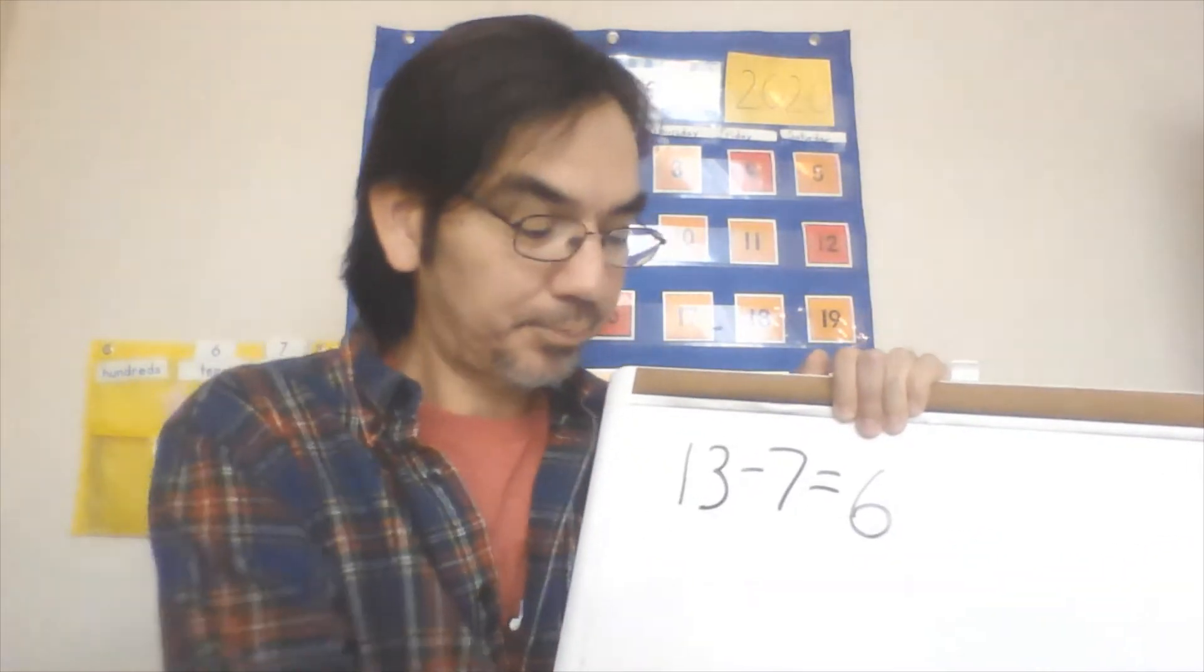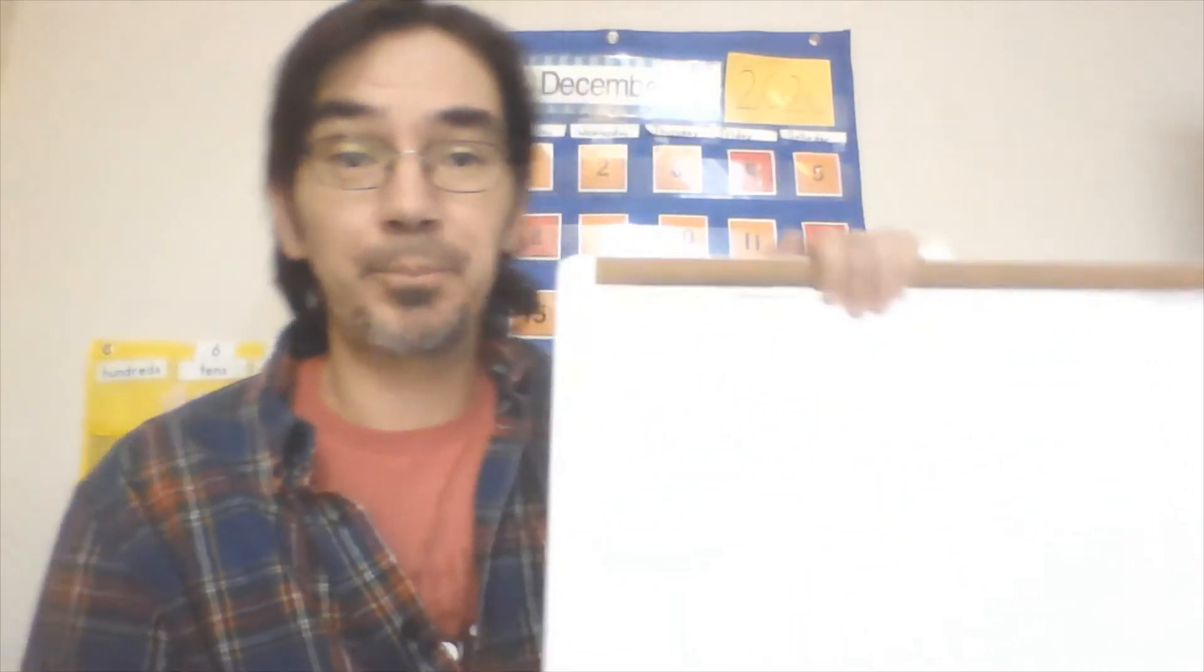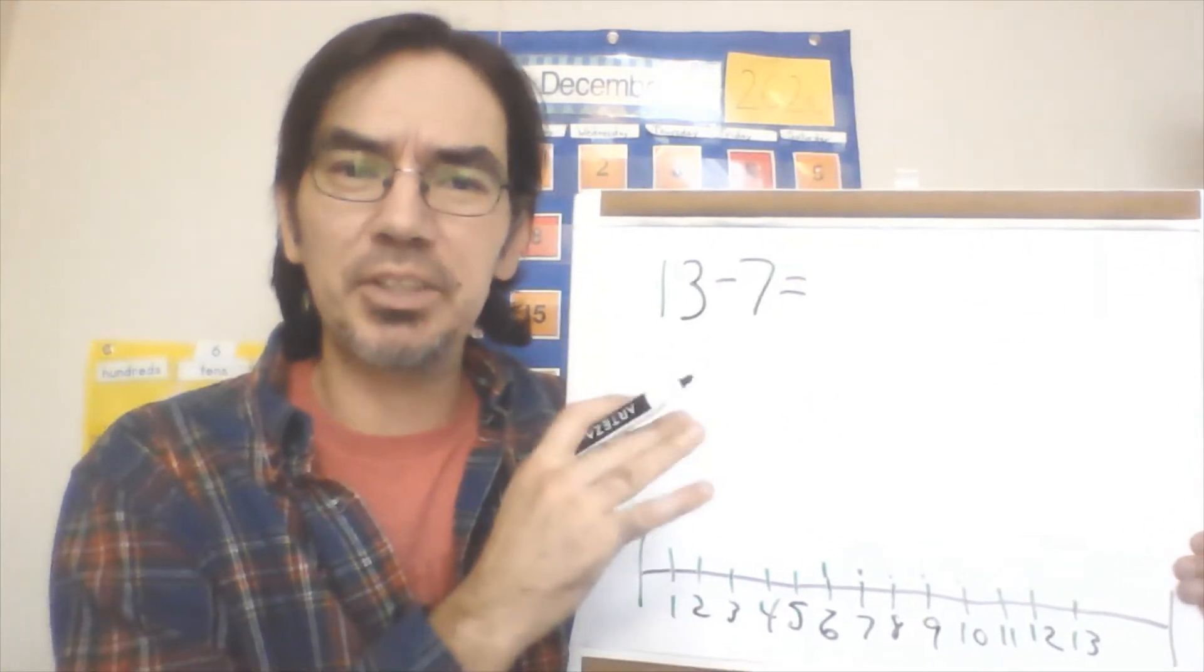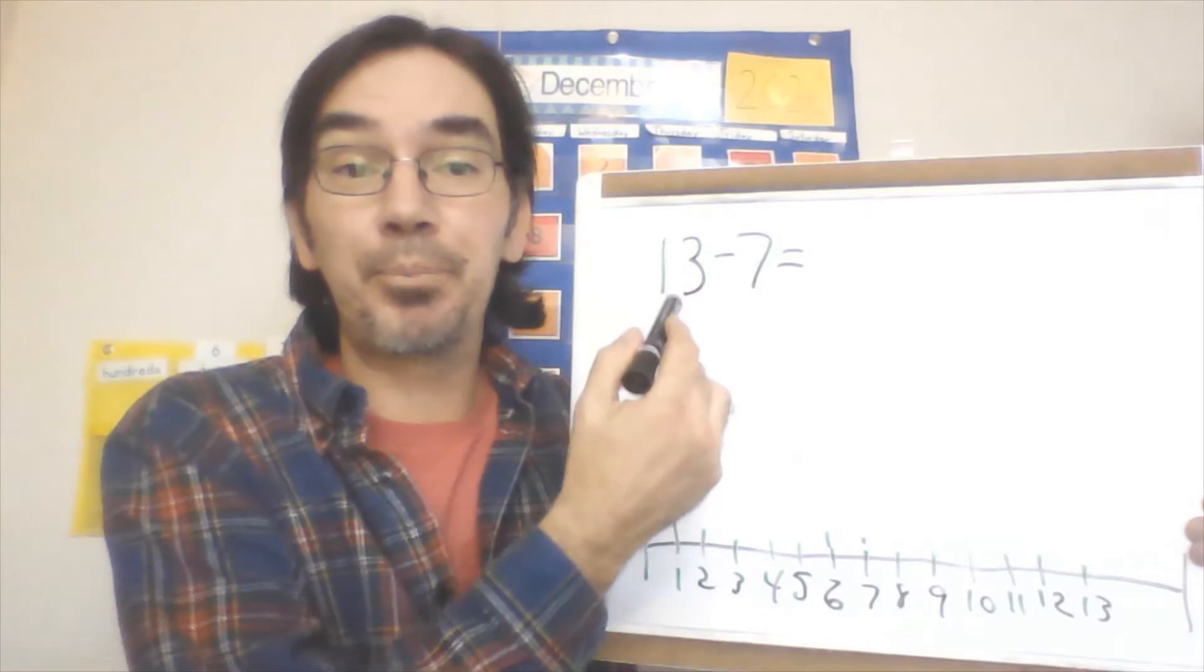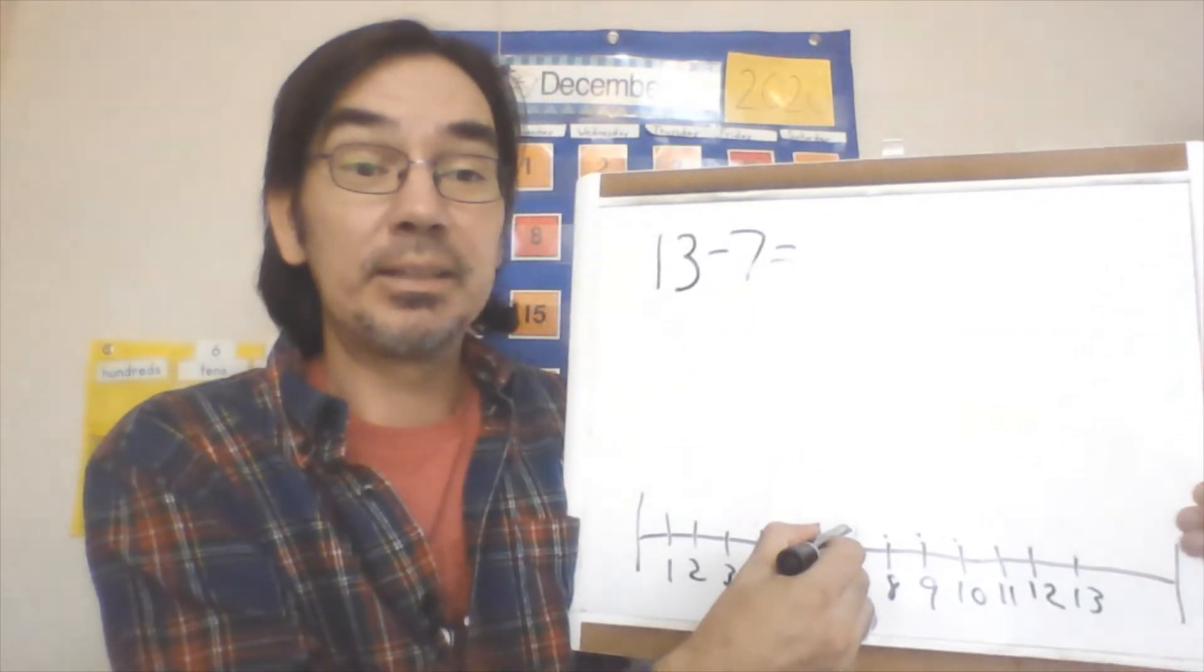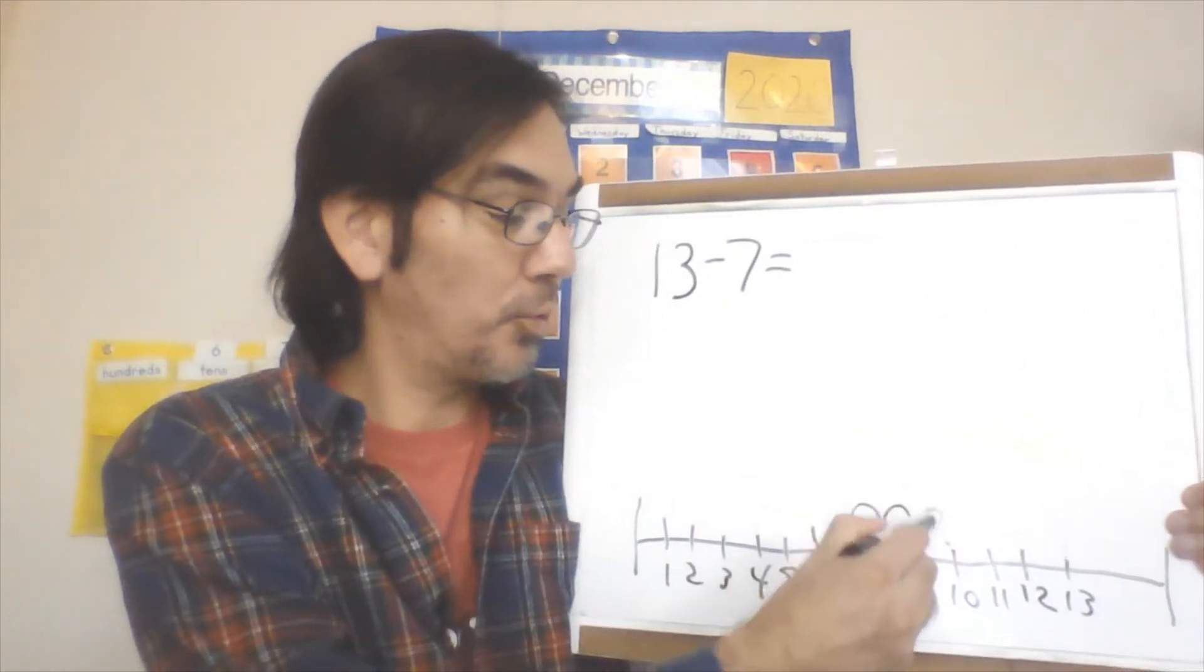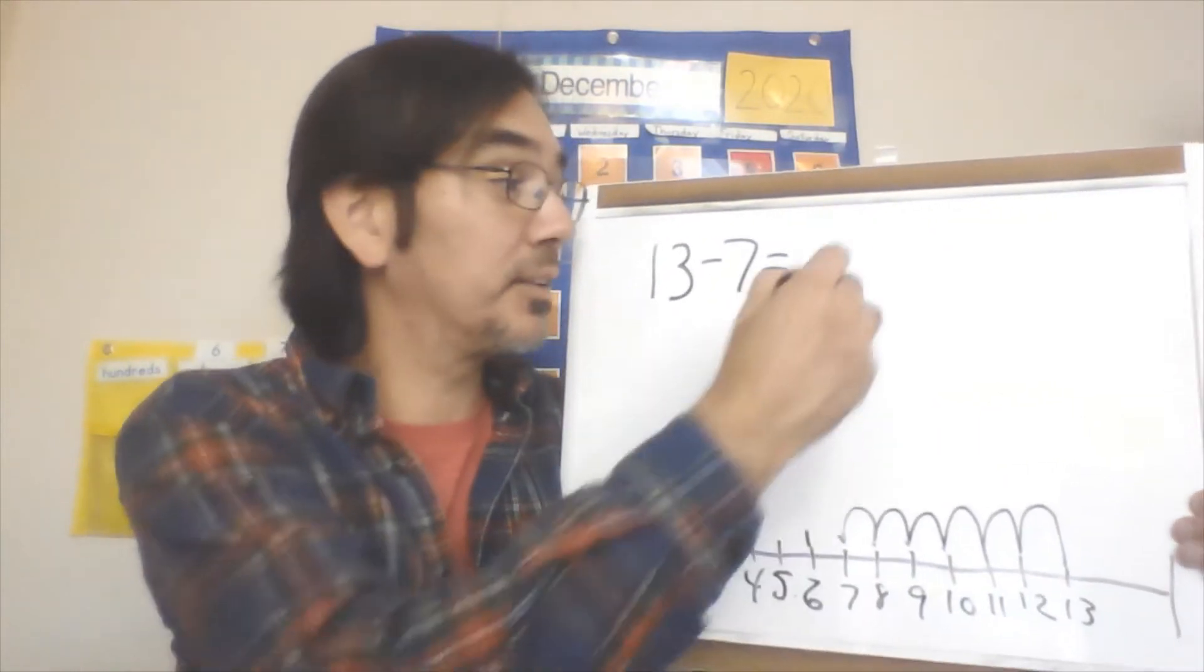Now remember, addition and subtraction are related, so we just counted back. We can also count on. If we didn't know that this was six and we weren't sure, and we're really not too comfortable with our subtraction just yet, we can use addition to help you solve that. Start at the lower number and count on until you reach the bigger number, and then you just count how many jumps you made. So we start at seven this time and we're gonna jump until we reach 13, and then we're gonna count how many jumps we had. One, two, three, four, five, six. We landed on 13. How many jumps was that? Six. Look at that.